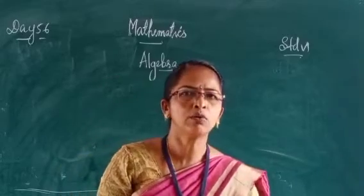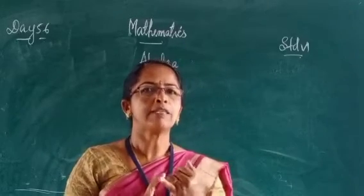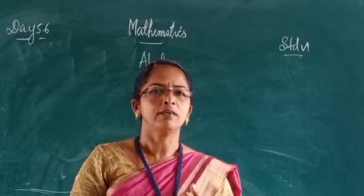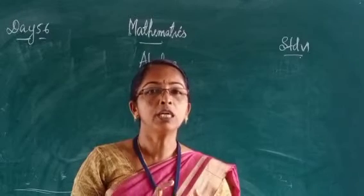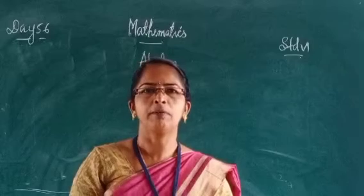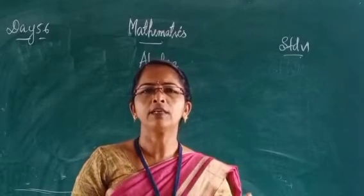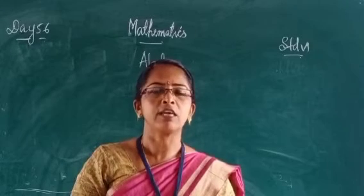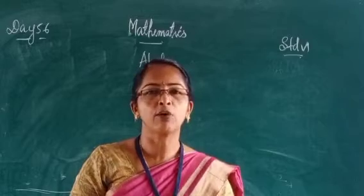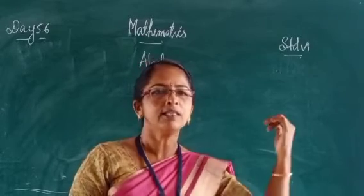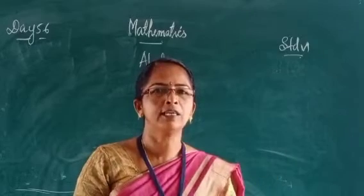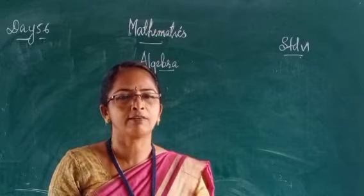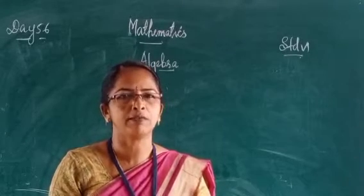We have studied about some branches of Mathematics. One branch is Arithmetic, in which we have studied about numbers, operations of numbers, and uses of numbers. In another branch we study shapes — the different shapes. That branch is called Geometry. Another branch is Algebra, in which we are going to study the use of letters — use of letters means English alphabets.